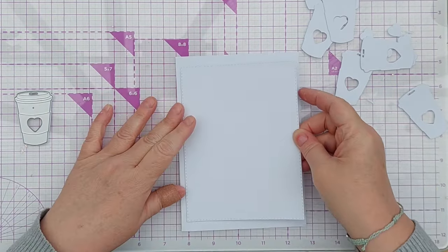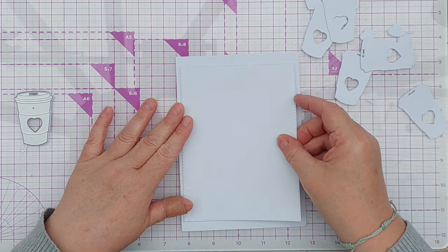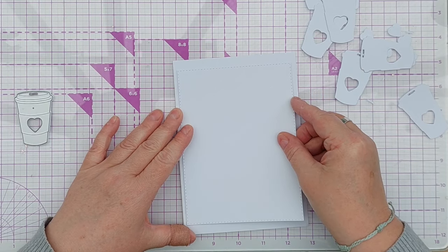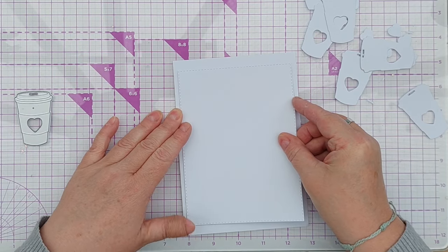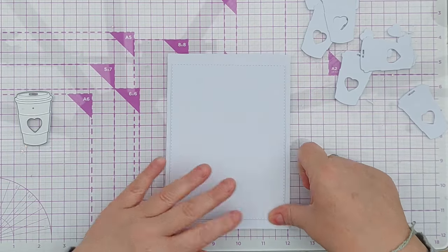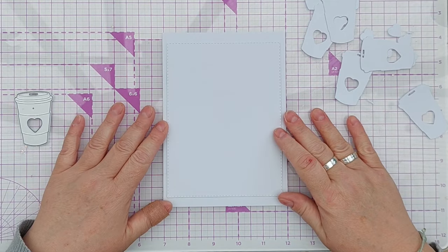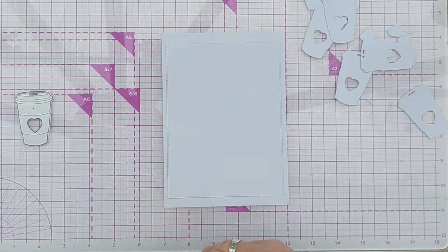I think all the rectangle dies on the market are made for US sized cards not UK sized cards, so they never quite fit right because this is a five by seven card blank and this is the largest rectangle die, but I think that looks all right.